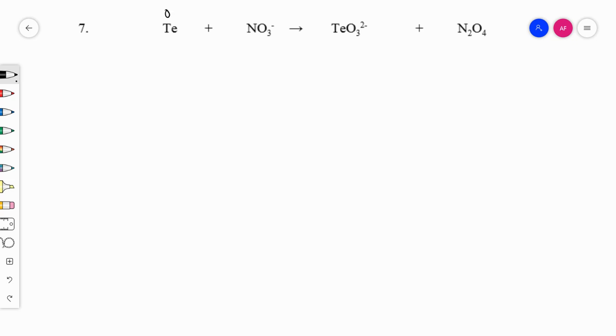Tellurium is a zero over here. Tellurium then becomes, let's see, negative two times three is negative six. So then therefore it must be a positive four. The overall charge has been negative three. So four plus negative six. Okay, so that is an oxidation reaction.